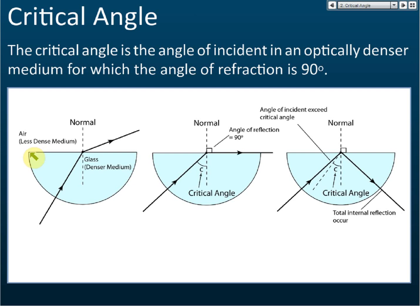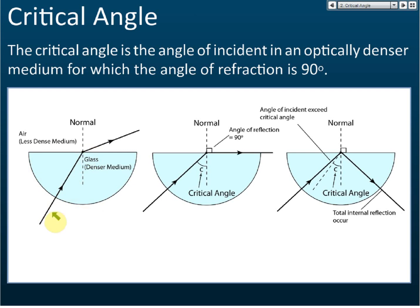We use a semi-circular prism. The reason we use this semi-circular prism is that if the light ray points towards the center of the circle, it will not be refracted — it will go straight in. So light enters from a less dense medium into a denser medium. When the light ray moves from a denser medium to a less dense medium, it is refracted away from the normal.